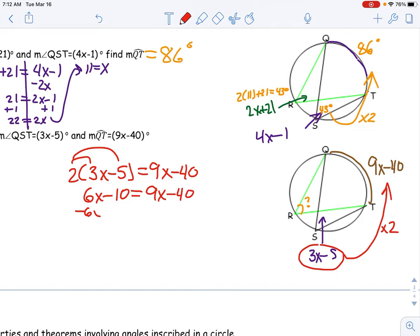Subtract 6x from both sides: negative 10 equals 3x minus 40. Plus 40 to both sides, we're going to get 30 equals 3x. Divide both sides by 3 and we get x equals 10. Sweet.